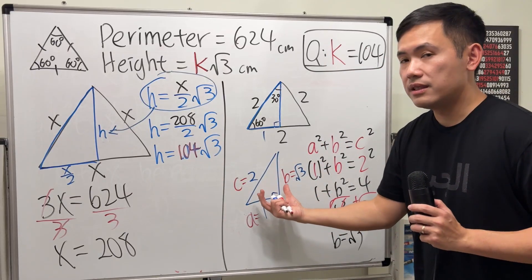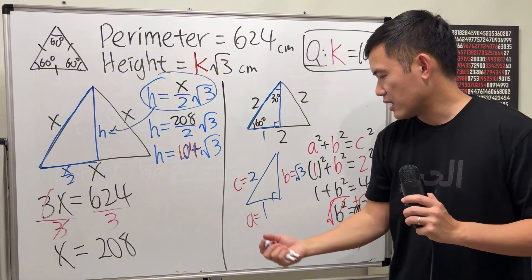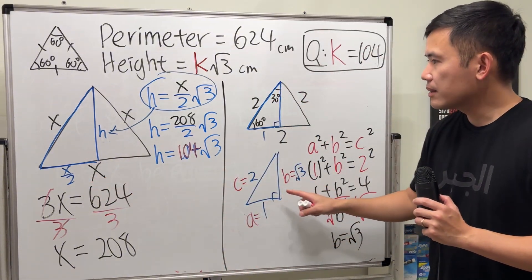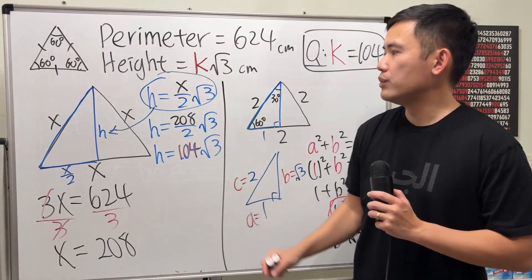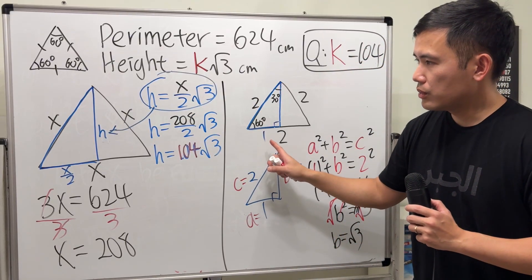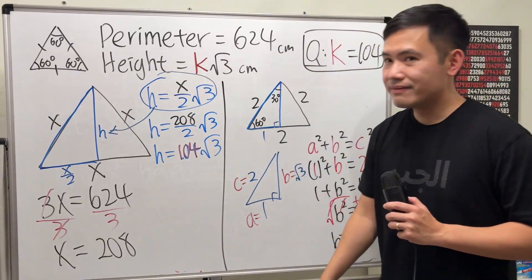Because you can take this as your base triangle, you can scale it up or scale it down. So take this, multiply by x over 2. Take that, multiply by x over 2. That will give you the height. Take this, multiply by x over 2. 2 and 2 will cancel, so it's just x. That's it.